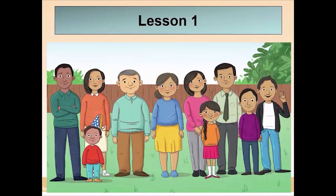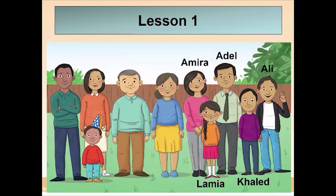Here we have the family of Ali. Here is Ali. This is his mother Amira, his father Adil, his sister Lamia, and his brother Khalid. Here is Huda, and Huda is Ali's grandmother. Umar is Ali's grandfather. Judy is Ali's aunt. Marwan is Ali's uncle. And the last person in Ali's family is Tariq, and Tariq is Ali's cousin.